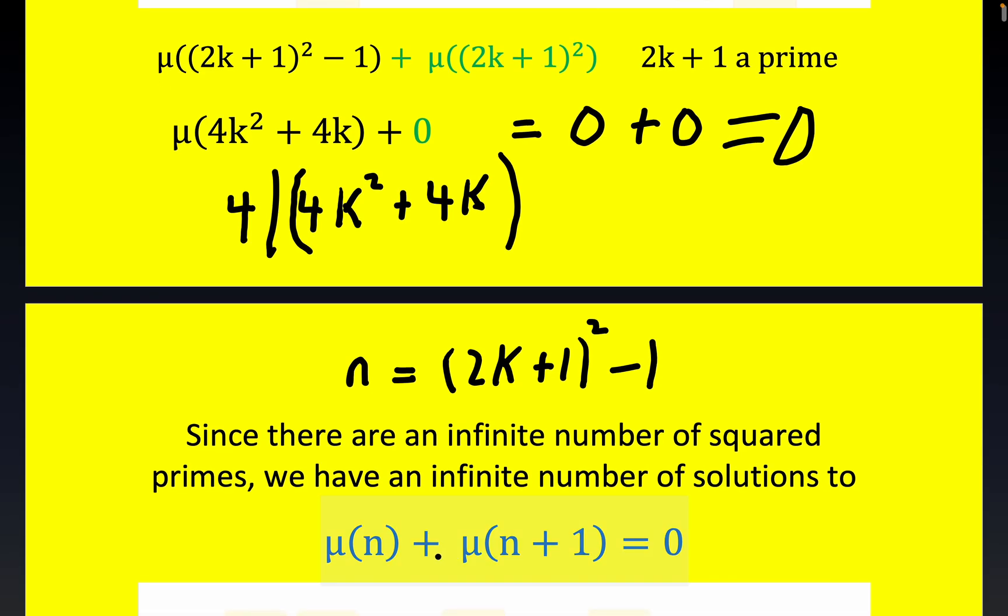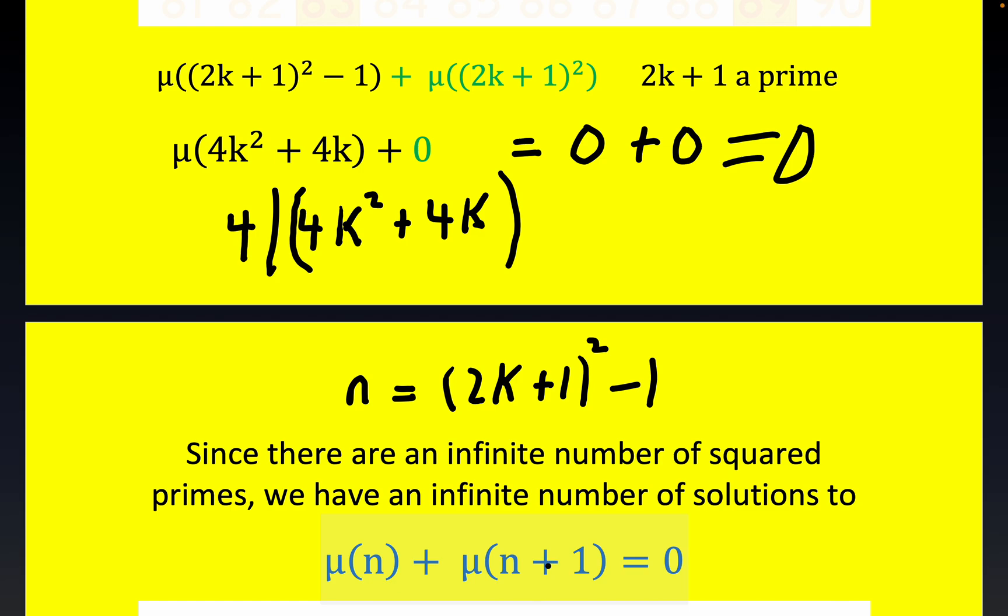So n equals (2k+1)² - 1, and then the rest of it follows from our earlier work. And since there are an infinite number of primes, there's an infinite number of prime squares and that completes the proof folks.